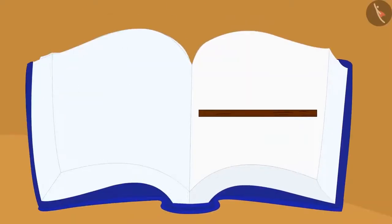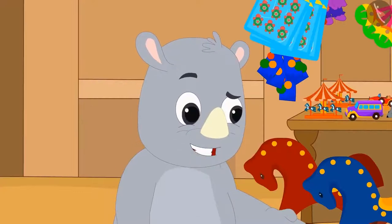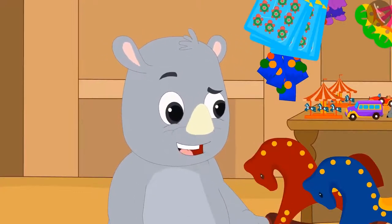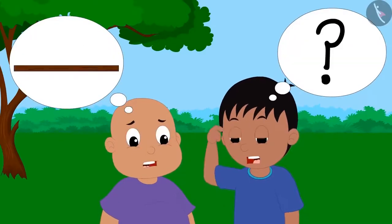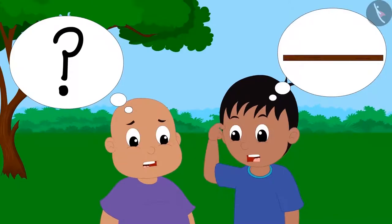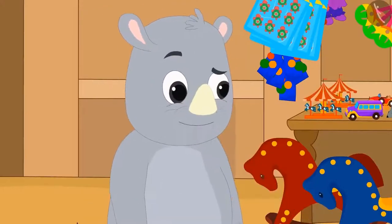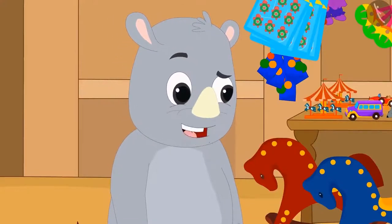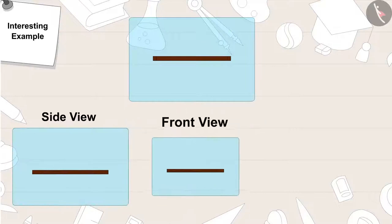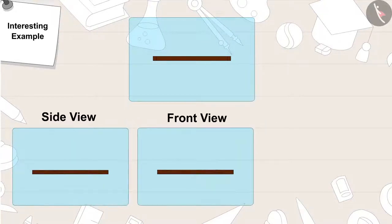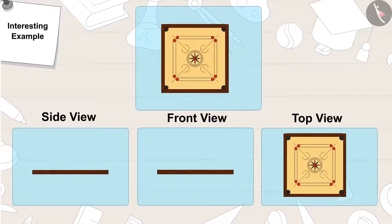'This is your last picture. Let's see if you can at least identify this object.' Raju and Bablu did their best but could not identify it. They were embarrassed and said, 'We don't know this either.' 'Ha ha ha! You lost! This is a carom board.' A carom board looks like this from the side, like this from the front, and like this from the top.